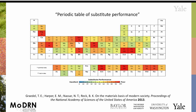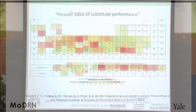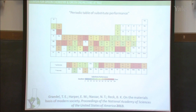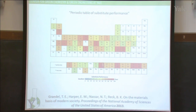Another interesting finding from Gradle's work is that virtually all of these elements tend to be used almost in combination. Something like an iPhone has around 90 or 100 different elements in it. So it's pretty common to find technologies hitting a lot of these red boxes, and then you have to ask questions about priority — do we need ytterbium in our smartphone, or do we need to be saving it for some medical use or water treatment application?